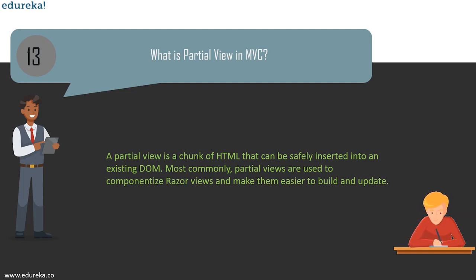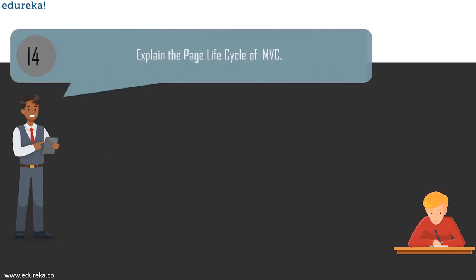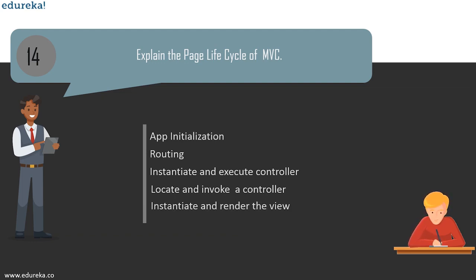The next question is: can you explain the page life cycle of MVC? A page life cycle involves five different stages: first, app initialization; after that, routing; once routing is done, instantiate and execute the controller; then locate and invoke the controller action; and finally, instantiate and render the view. These are the various steps involved in the MVC page life cycle, from app initialization to rendering the view.